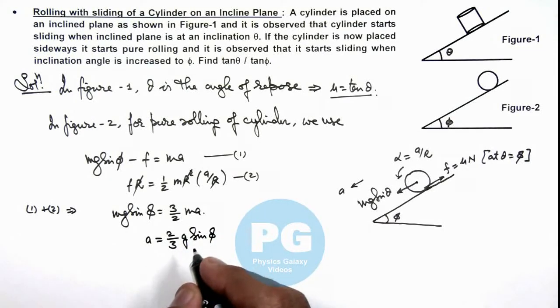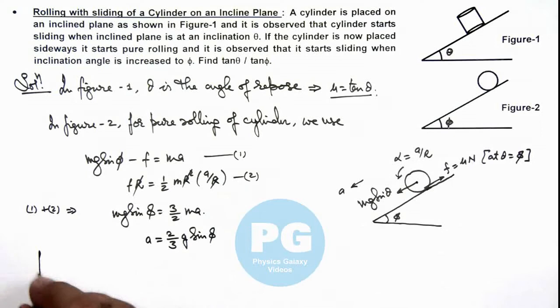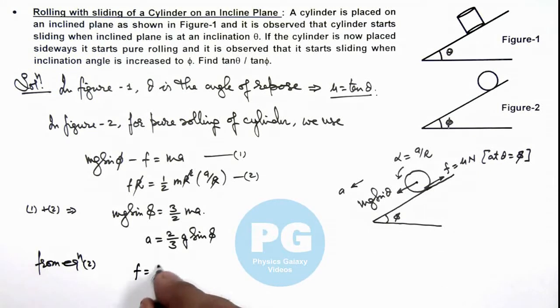That is the acceleration of this cylinder. If we substitute it in equation 2, here we can see from equation 2, the value of friction we are getting is 1 by 3 mg sine phi. That is the value of friction.